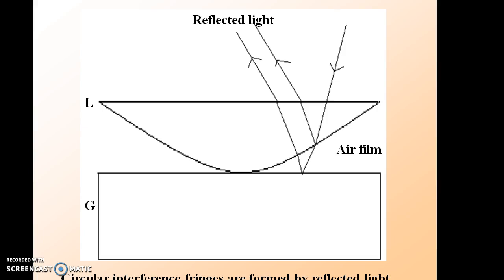At the point of contact between the lens and the glass plate, the thickness of the film is zero and it goes on gradually increasing from the point of contact outwards on either side. When monochromatic light is incident normally on the lens surface, light reflected from the upper surface of the film interferes with the light reflected from the lower surface of the film. As a result, alternate dark and bright concentric circular rings are produced with their central spot as dark, which are known as Newton's rings pattern.